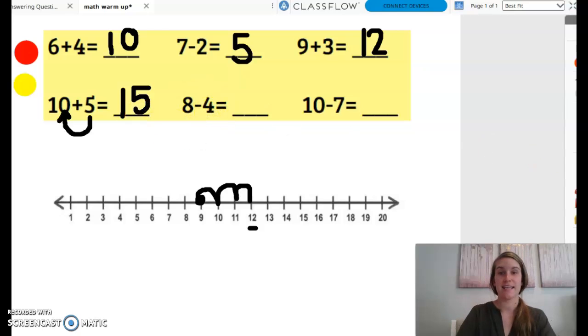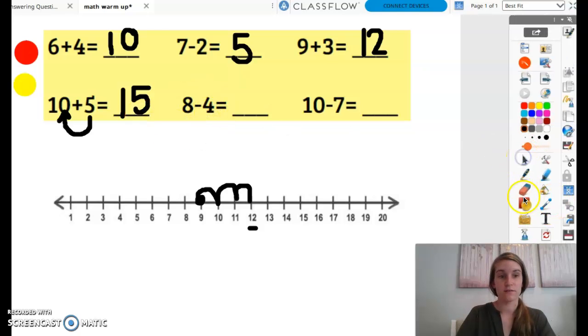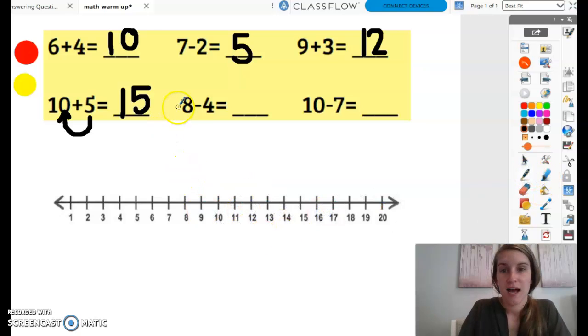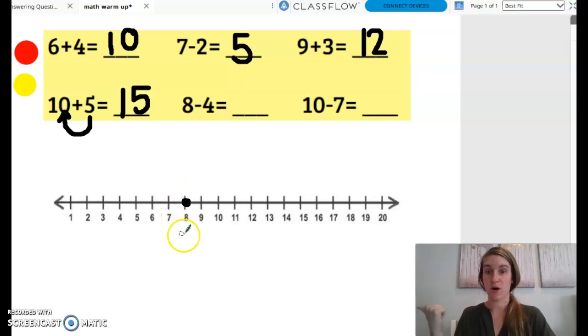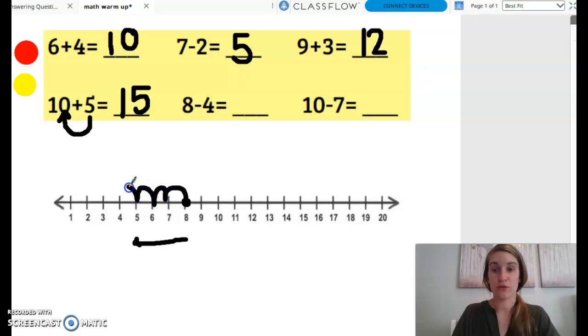All right, next, eight minus four. Let's use our number line for this one. I start with eight. Now that minus sign means I'm taking away four or I'm getting smaller. So I need to go to the left. Eight minus one, two, three, four equals what number? Four. Great job.